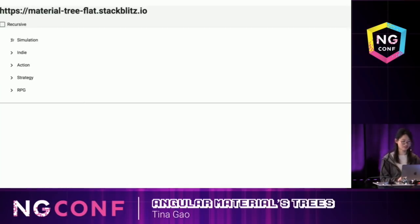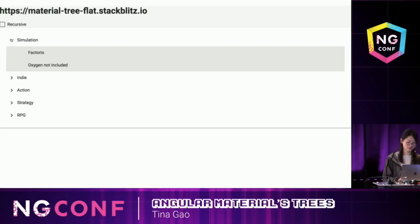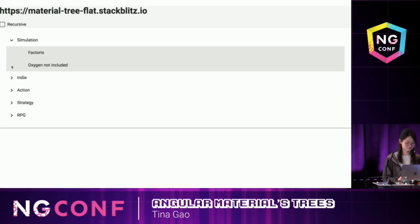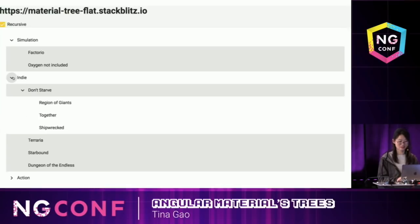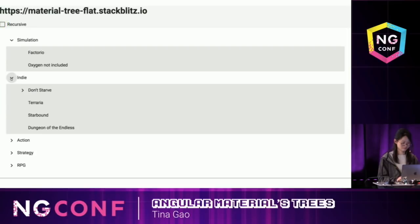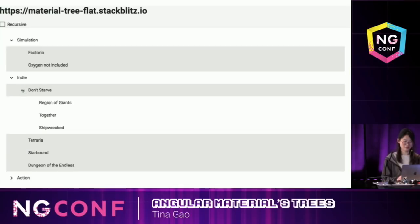Here's the flat tree we built based on the data. Users can click or tap on the toggle to expand the tree node. We can also make the toggle recursive, so it expands all the children. Or make it non-recursive, so it can expand level by level.